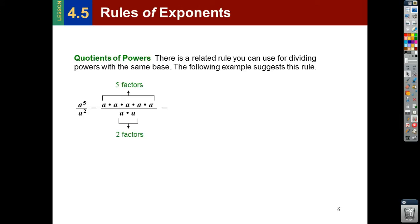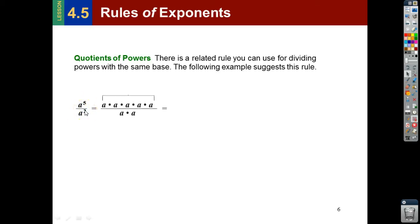So if you multiply, it means you add exponents. Now we're going to look at division. We have a to the fifth over a squared — some number raised to the fifth power divided by that same number raised to the second power.